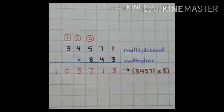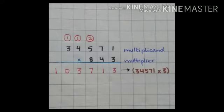So now aap next place pe move kareenge. 4 times 3 is 12, but aap carry pe add kareenge. So 12 plus 1 is 13. So 3 ko neeche write kareenge and 1 as a carry write kareenge 10,000 place pe. Next place: 3 times 3 is 9, but 9 plus 1 is 10, so aap 10 write kareenge.